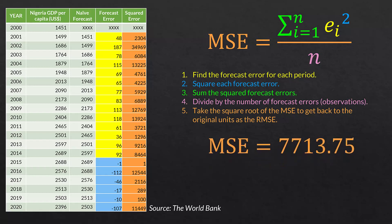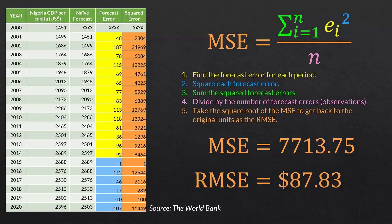If we take all of those values in the orange cells and find the mean, it is 7,713.75 — again, in squared US dollars. We take the square root, and the root mean square error is $87.83, which makes a lot more sense.